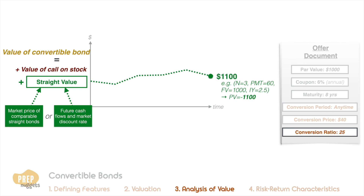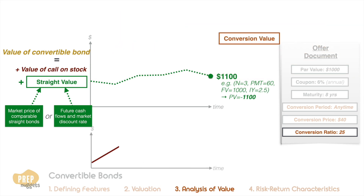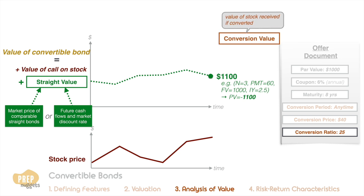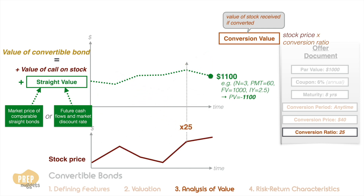This value should be compared to the conversion value, which is related to the stock price. The conversion value of a convertible bond is the value of the common stock received by the bondholder if he makes the conversion. It is simply calculated as the price of each share times the conversion ratio. For instance, if each share is trading at $50, the conversion value of the convertible bond is $1,250.